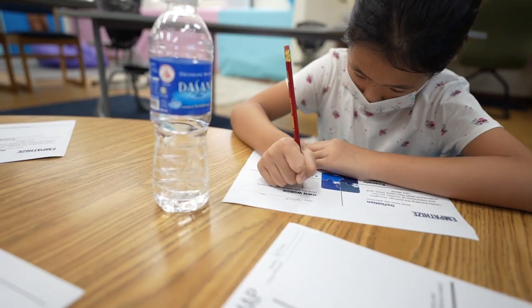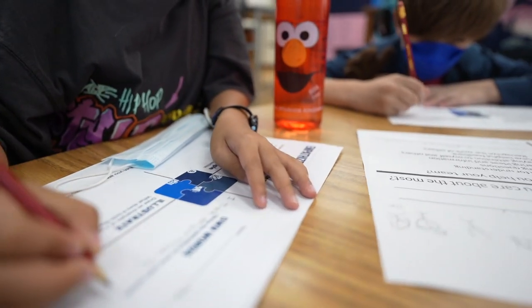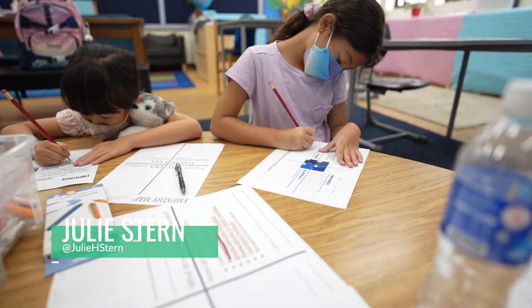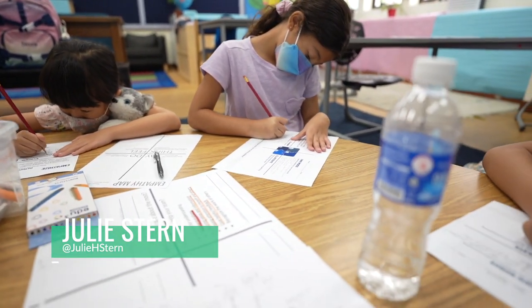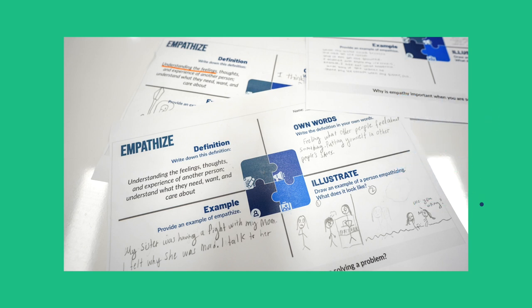After learning about the power of empathy in creative problem solving, we filled out a CI graphic organizer on the concept of empathy — an organizer from Julie Stern, a leader in conceptual understanding. CI stands for state, elaborate, exemplify, and illustrate. Students stated the definition, wrote it in their own words, provided an example, and drew a picture of what empathy looks like.